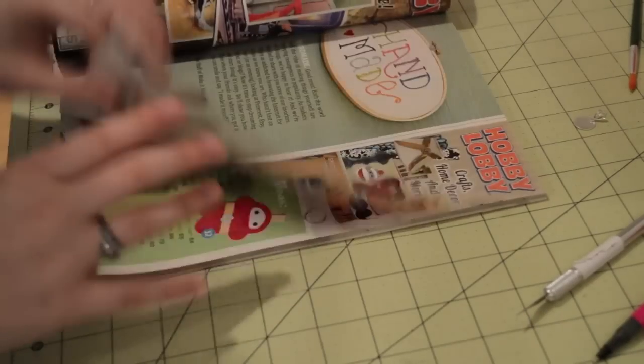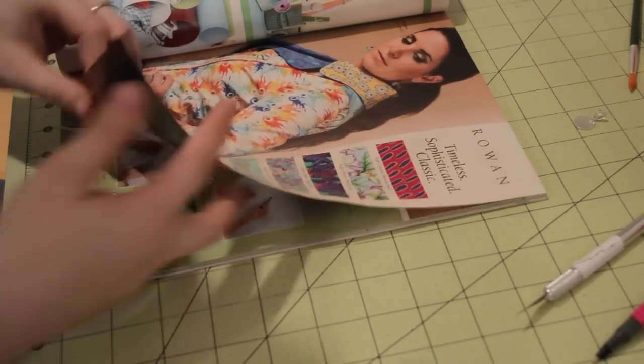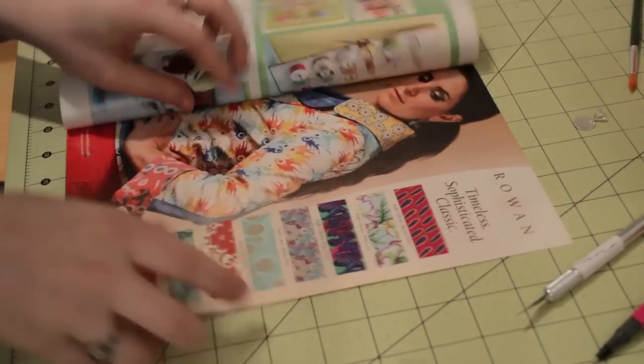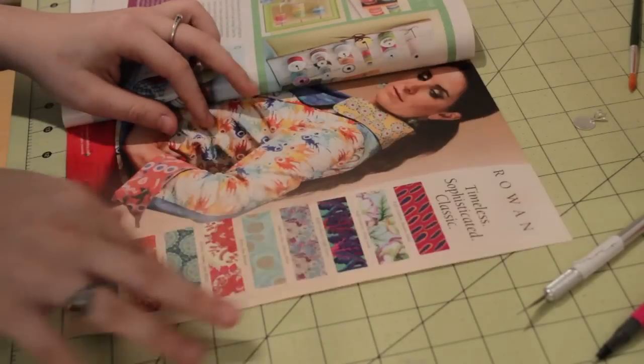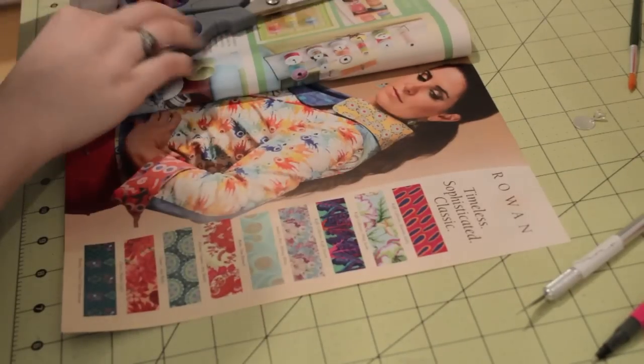So once you've found your image, it can be from scrapbook paper, a book, newspaper, just about anything. I folded my pages back because I only wanted to be cutting through one page, I didn't want all these cuts in my magazine.